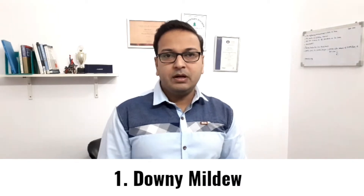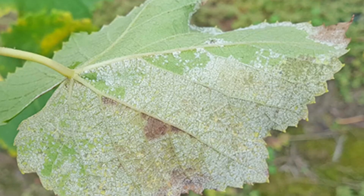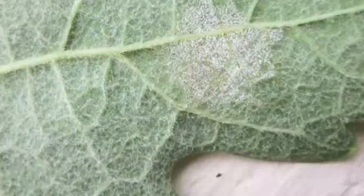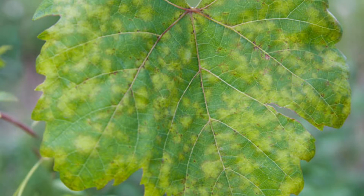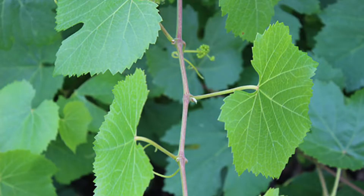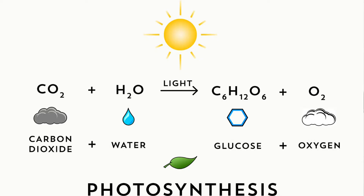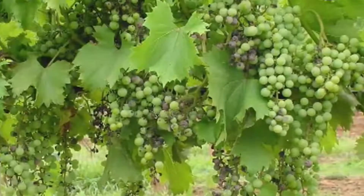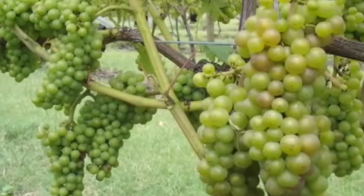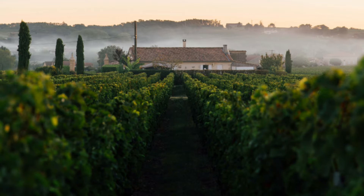Number one is Downy Mildew, Plasmopara viticola. It is a white fungal disease which develops on the lower surface of the leaf, making the leaf yellow on the upper part. The upper surface gets yellow spots and eventually the leaf dries up and drops. Without leaves, the plant cannot produce the sugar required in the grape, which eventually becomes alcohol through fermentation. The berries also become water-soaked and pale yellow in color and drop. This disease is common in cool humid climates.